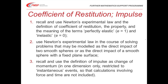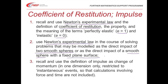Under that heading in the specification we see three sections. The first refers to Newton's experimental law — the one that says the speed of separation equals E times the speed of approach, where E is the Coefficient of Restitution. The second is using Newton's experimental law to solve problems modelled as the direct impact of two smooth spheres, or the direct impact of one smooth sphere with a fixed plane — in other words, rebounding off a wall or bouncing off the floor.